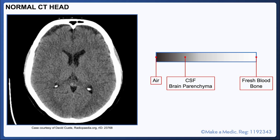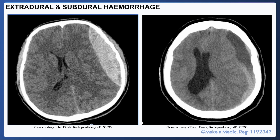Fresh blood appears white initially because it contains a high concentration of red cells, but over time the cellular components of the blood break down and it will appear hypodense or darker in color. Another simple tip for interpreting CT heads is to look for symmetry — on the whole it should be symmetrical the entire way through the scan as you scroll through the images, and any asymmetry should be looked into further.